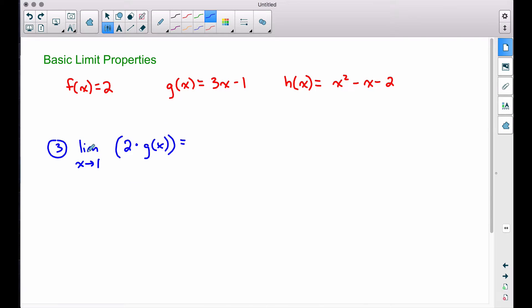In our third example, the limit as x approaches one of two times g of x. We can do the same thing we did in the previous example, where we can just do direct substitution. All I'm really going to do here is take 2, that 2 right there, and I'm going to multiply it by whatever I get when I plug 1 into g of x. So plugging 1 into our g of x function, 3 times 1 is 3, minus 1 gives us 2. So 2 times 2 gives us a limit of 4. That is our limit for example number 3.